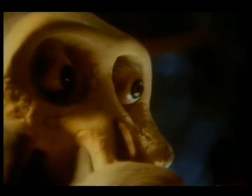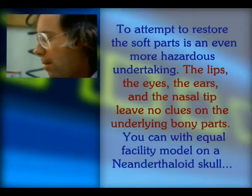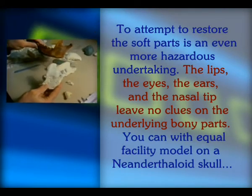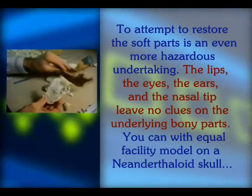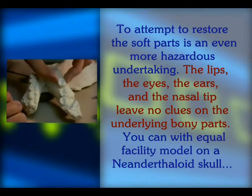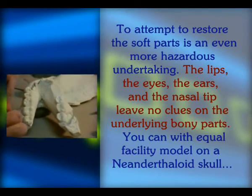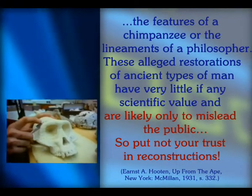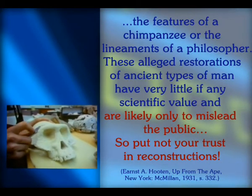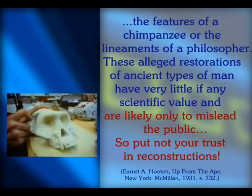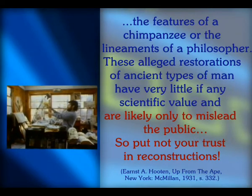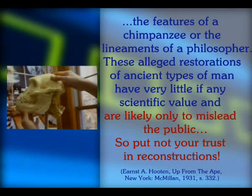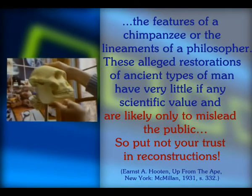Ernst Hutton from Harvard University explained the situation like this: 'To attempt to restore the soft parts is an even more hazardous undertaking. The lips, the eyes, the ears, and the nasal tip leave no clues on the underlying bony parts. You can with equal facility model on a Neanderthaloid skull the features of a chimpanzee, or the lineaments of a philosopher. These alleged restorations of ancient types of men have very little if any scientific value and are likely only to mislead the public. So put not your trust in reconstructions.'